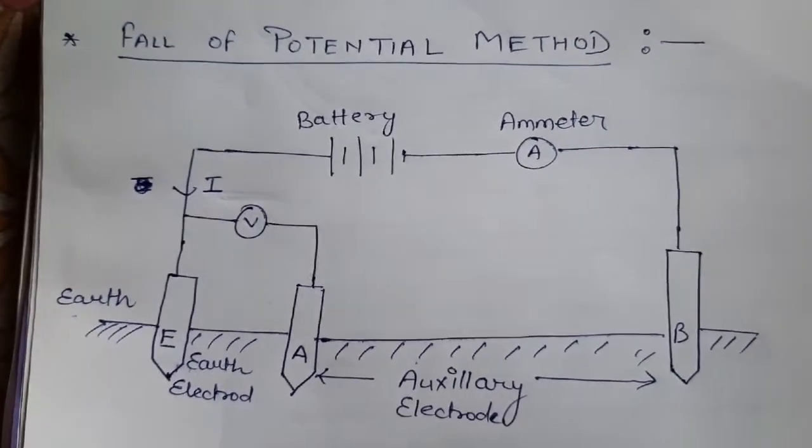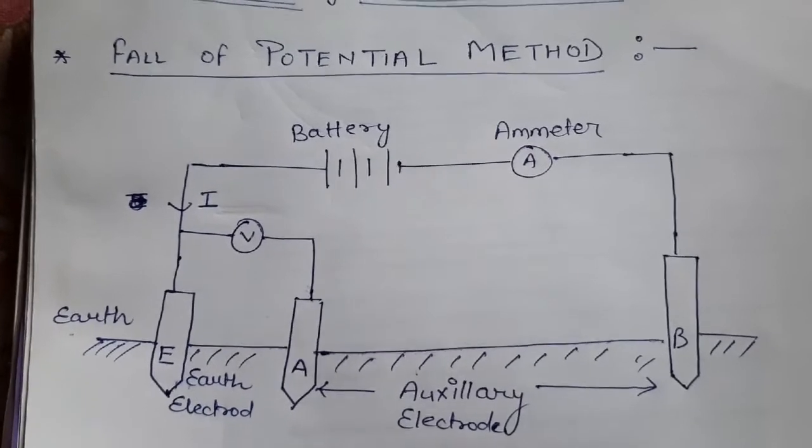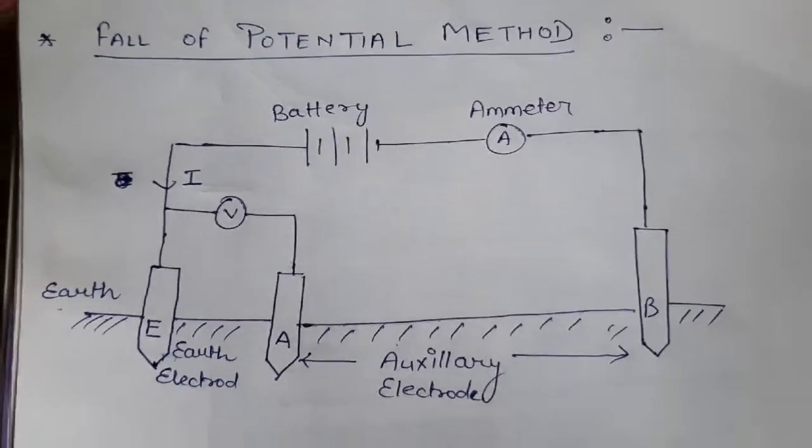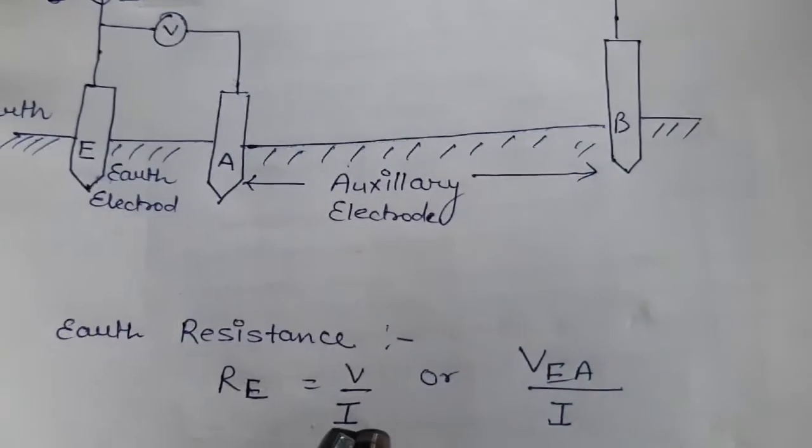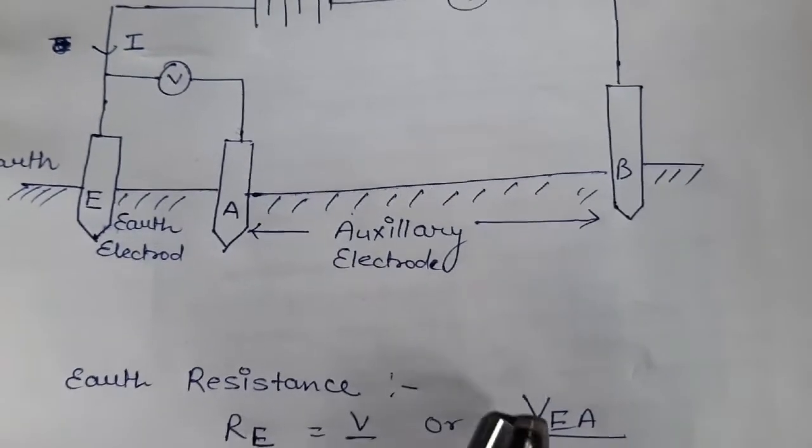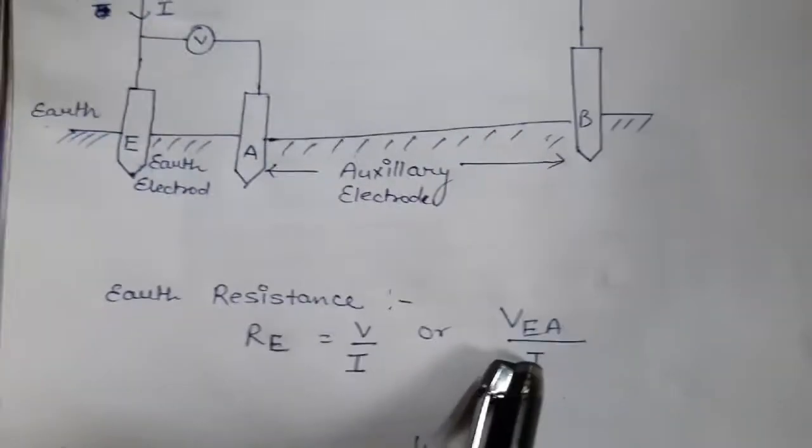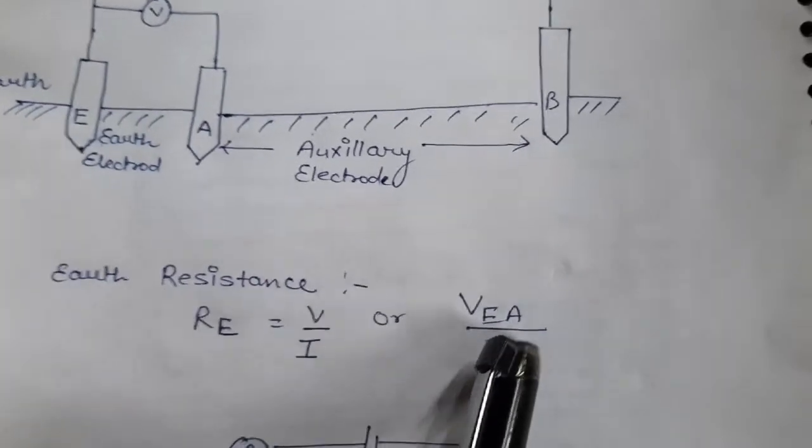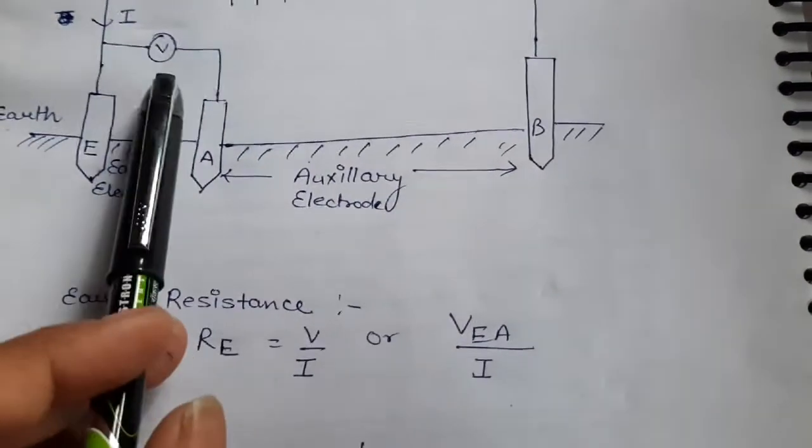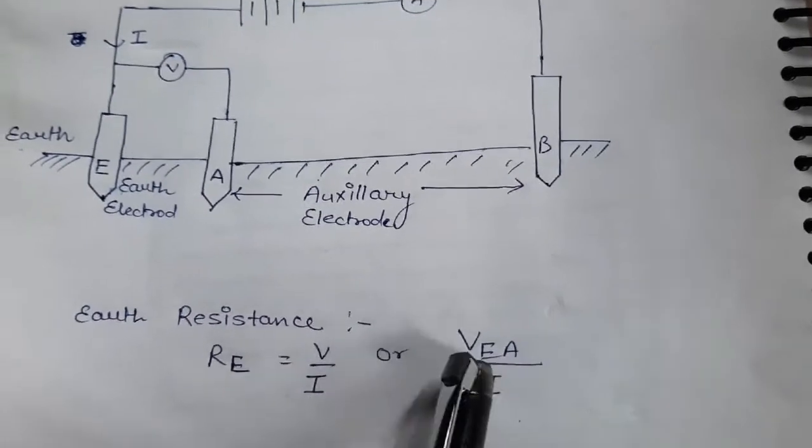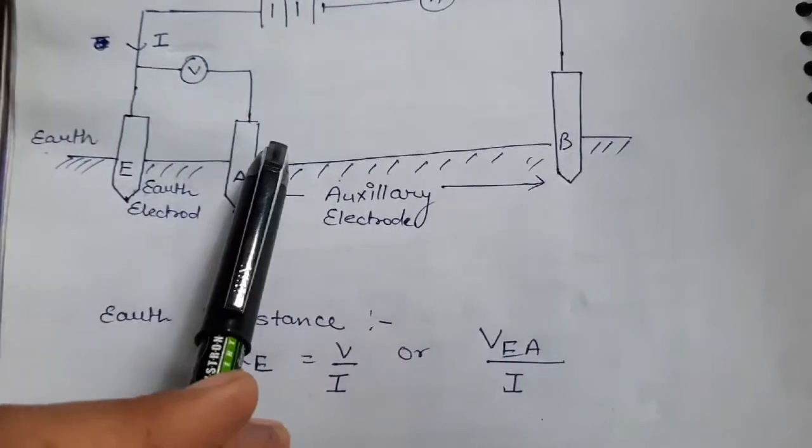The earth resistance is calculated by the formula Re = V/I or Ve/I, where voltage between E and A is measured by the voltmeter and current flows between E and A.